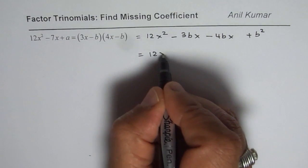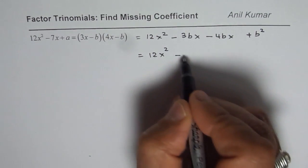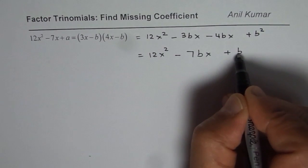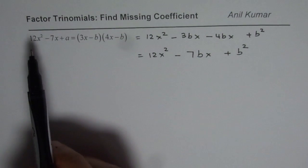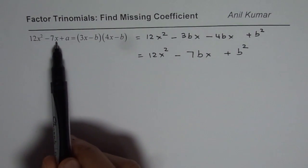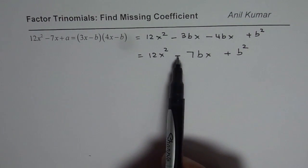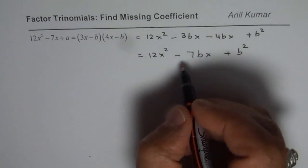And then minus b times minus b gives you plus b squared. Now we can combine these two terms. When you combine these two terms, you get 12x squared minus 7bx. So if you compare, what do you get?